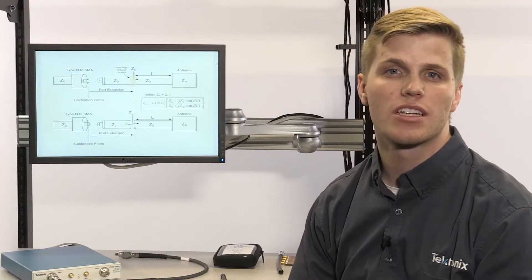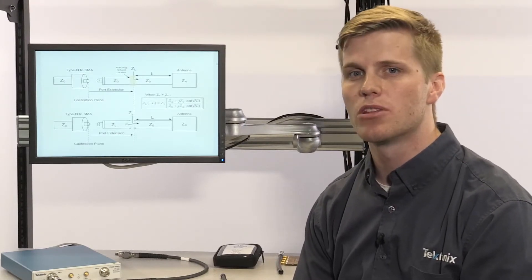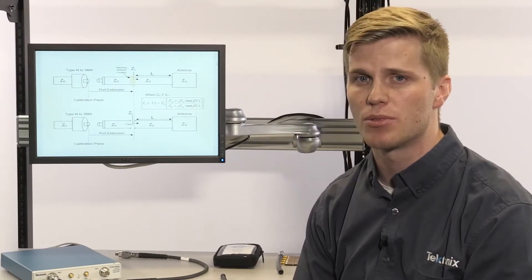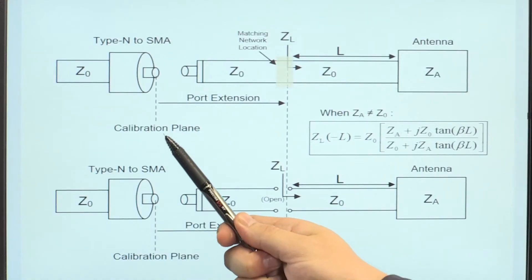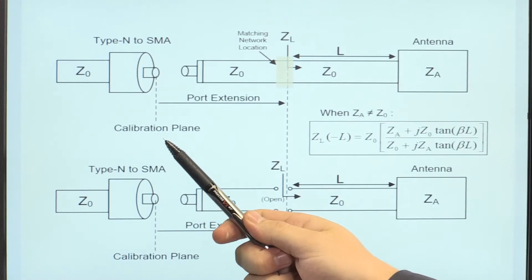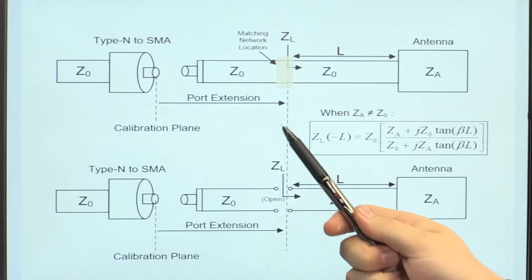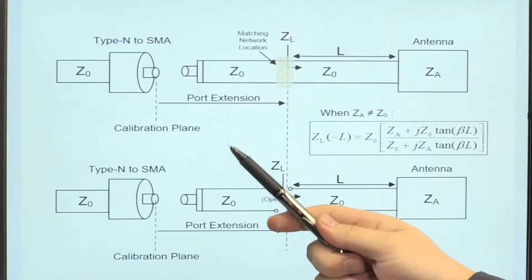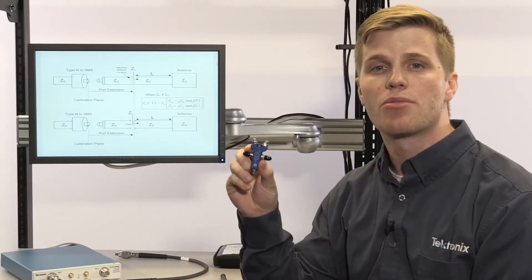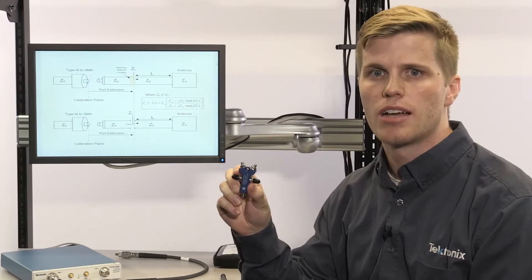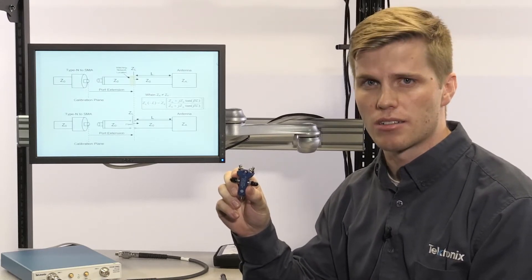The first step is to calibrate the VNA as close to the location of the matching network as possible. In this case, it's the end of the type N to SMA connector. And then to get the calibration plane to the location of the matching network, we're going to have to apply a port extension. So first, I'll calibrate using my 3.5 mm Spinner Cal Kit at the end of the type N to SMA connector.